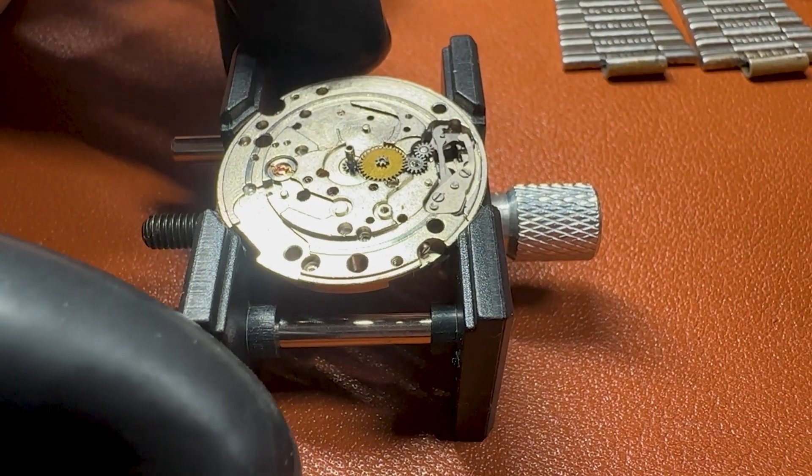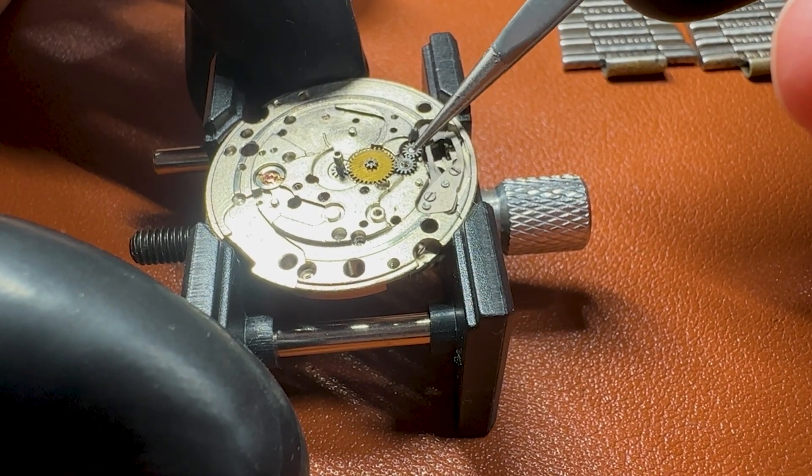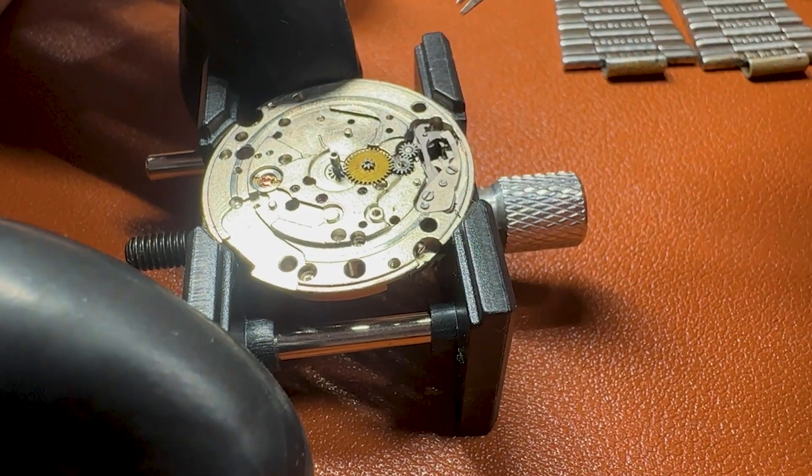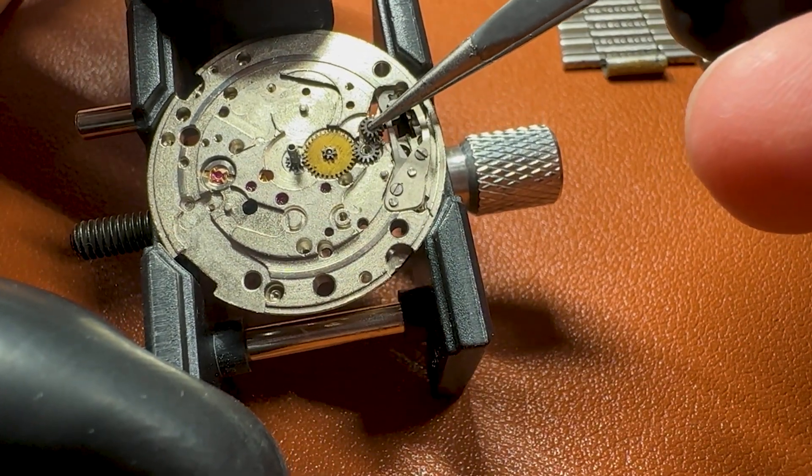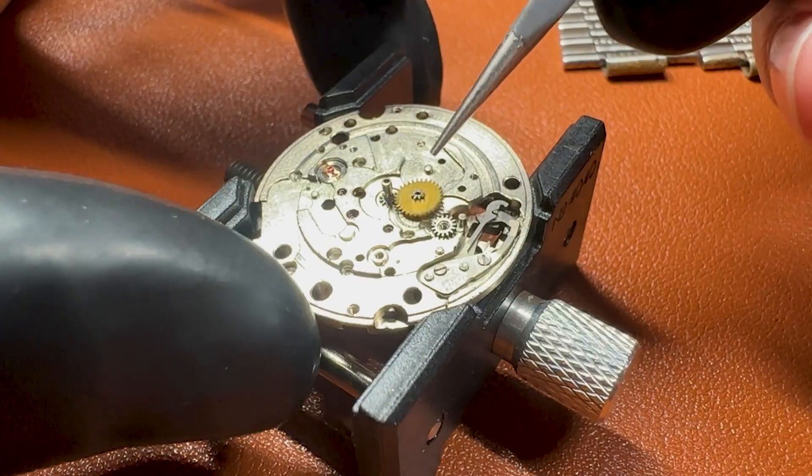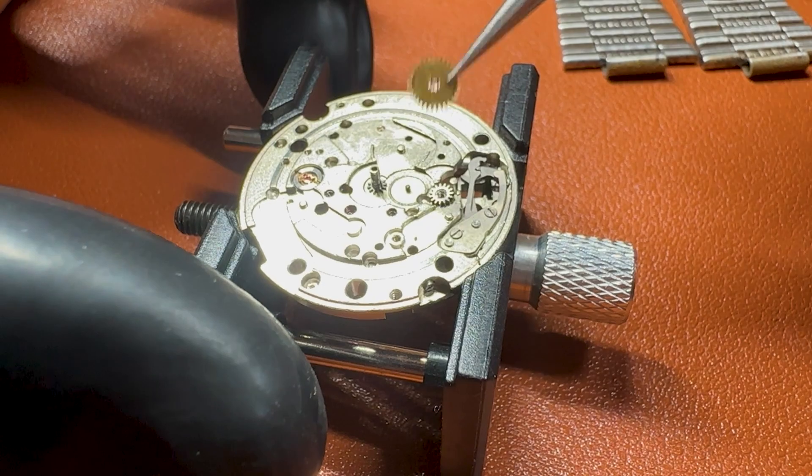Two smaller wheels and a bigger one that goes all the way to the cannon pinion. As you can see the cannon pinion has some movement. We remove these wheels and head over to the whole mechanism for the stem.